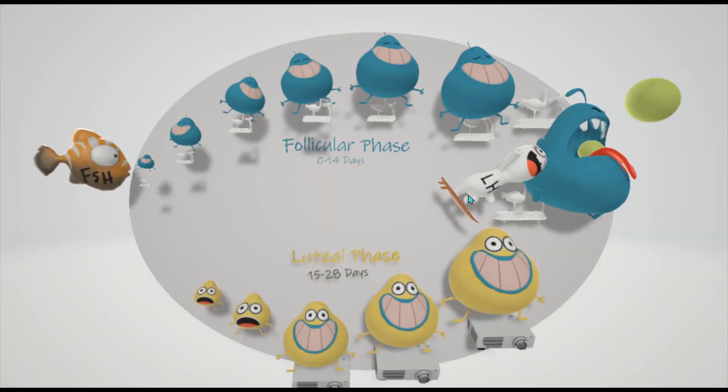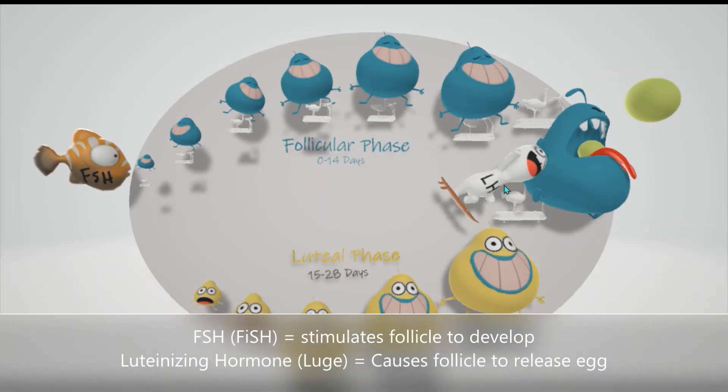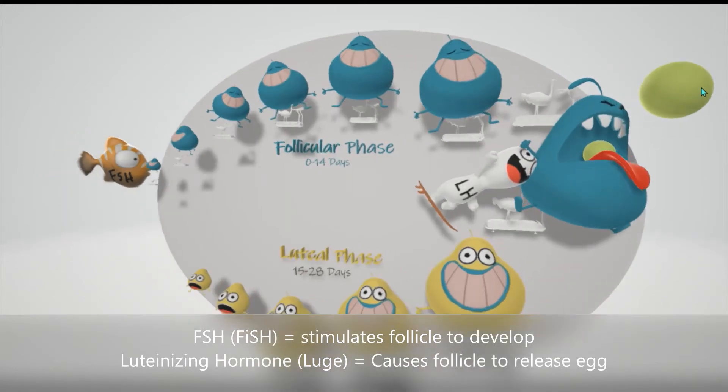LH, luteinizing hormone, represented by this kind of luge (if you don't know what a luge is, don't worry, it's sort of like a sled). This guy on a luge is in charge of a few things, but one of them being to tell the follicle to punch out that egg. That's why we see the luteinizing hormone punching the dominant follicle big enough, telling it to punch out the egg to go to the fallopian tube.